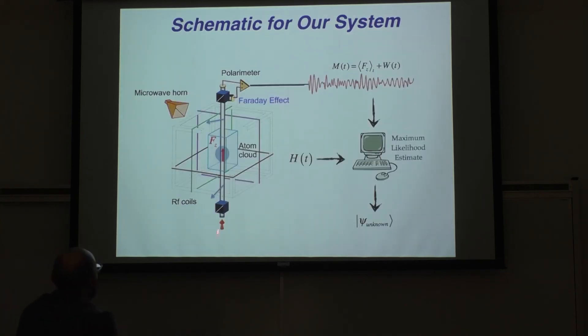So that's the experiment. Basically, the idea is, we prepare that state with those funky movies. We then apply another pulse sequence. And at the same time as we're shining this microwave horn, we measure it. And then we do some estimating.